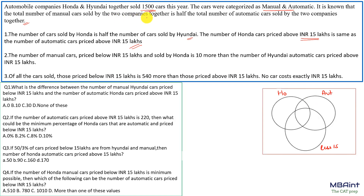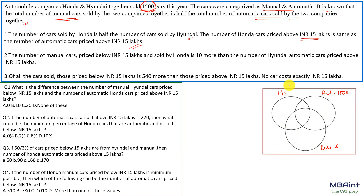Now let's fill in the information. Total cars = 1500. Since manual is half of automatic, automatic = 1000 and manual = 500. So everything inside the Automatic circle totals 1000, and everything outside it totals 500. Honda sold half of Hyundai's total, so Honda = 500 cars.